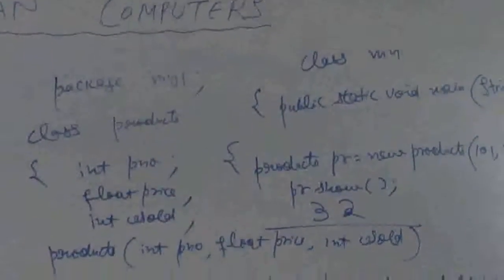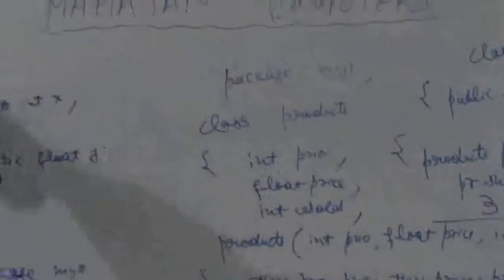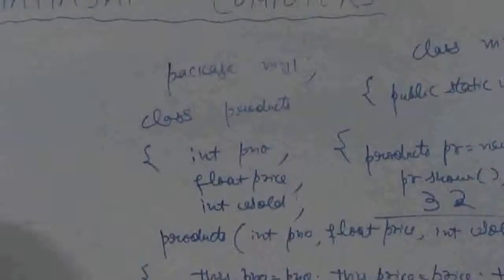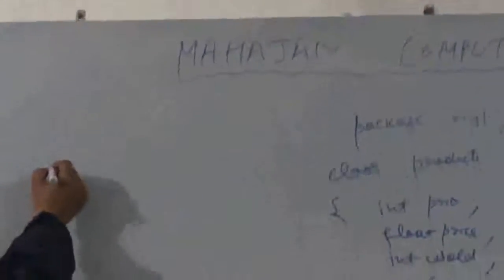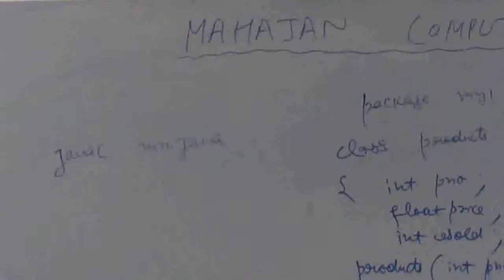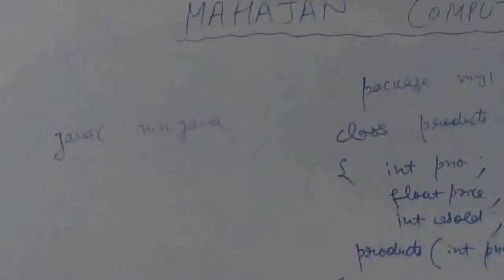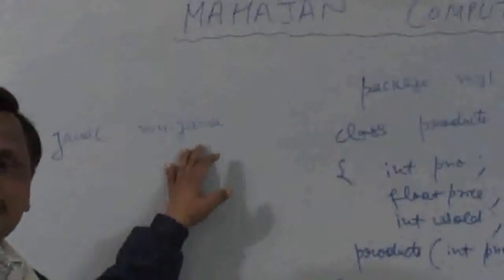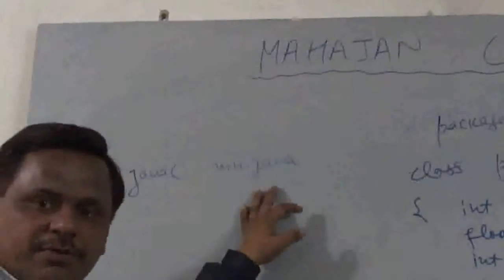A program belonging to a particular package is compiled in the same manner as any other Java program. Suppose the program file is named admin.java — at the command prompt I write: javac admin.java. This compiles the program. Whenever a Java program is compiled successfully, we get as many .class files as the number of classes in the program. In this case we get product.class as well as admin.class.